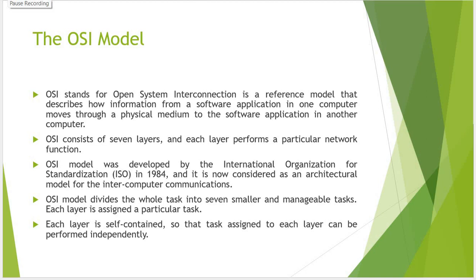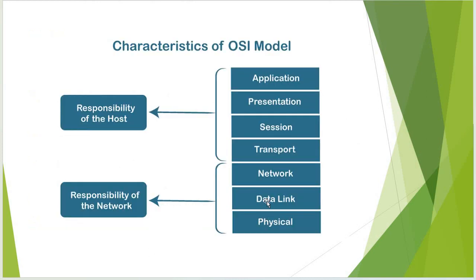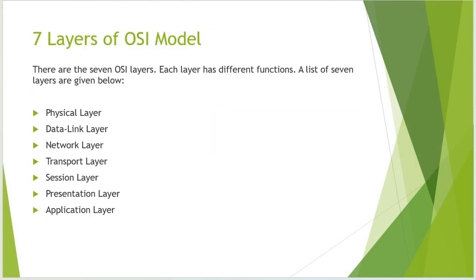The next important part is the OSI model. OSI stands for Open System Interconnection. There are a total of seven layers through which you can perform internet and computer network operations. The seven layers are: Physical, Data Link, Network, Transport, Session, Presentation, and Application. These seven layers are divided into two parts — the first three layers are responsible for the network, and the last four are the responsibility of the host.